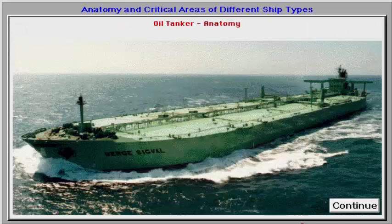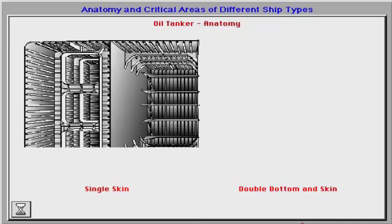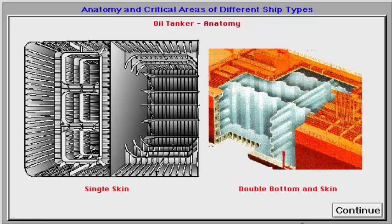The two main types of crude oil carriers are traditional single skin and the new design with double bottom and double skin. The main purpose of the modern design is to avoid oil spills if the outer shell is perforated. Double bottom will be a requirement for oil tankers carrying oil to US ports according to the Oil Pollution Act of 1990.